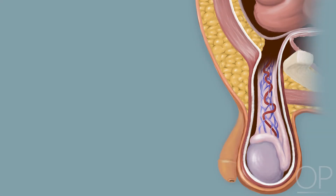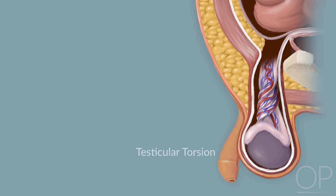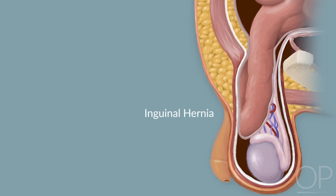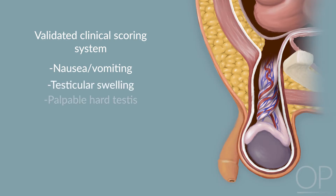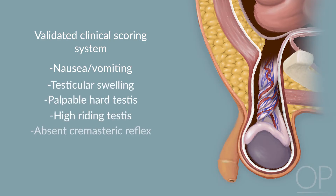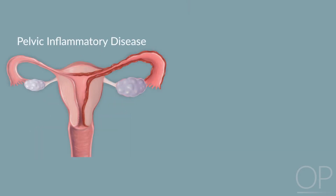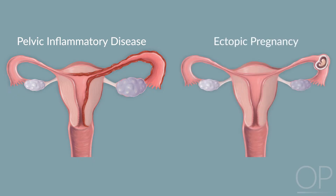Finally, pain originating from the genitourinary system can manifest as abdominal pain, so scrotal examination in male patients is necessary to evaluate for testicular torsion and inguinal hernias containing incarcerated bowel. A validated clinical scoring system for torsion is comprised of nausea, vomiting, testicular swelling, palpable hard testes, high-riding testes, and absent cremasteric reflex. Testicular elevation when the examiner runs one finger along the medial thigh is highly sensitive and specific for torsion.